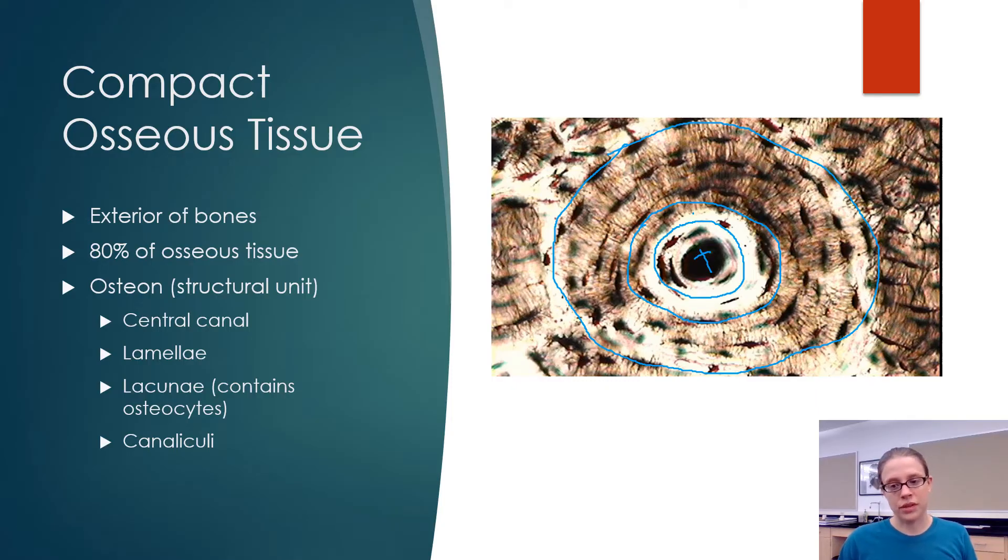What is an osteocyte? If you remember whenever you see 'cyte' at the end of the word it means a cell. So osteocyte just means a bone cell.